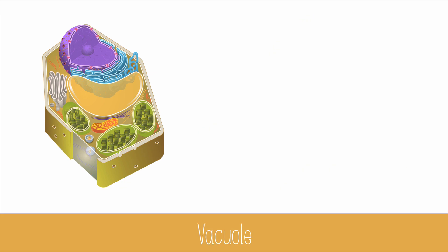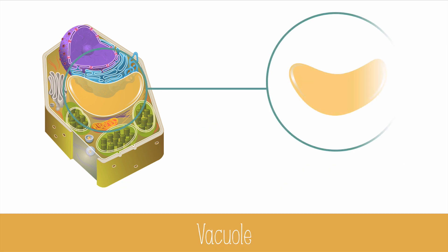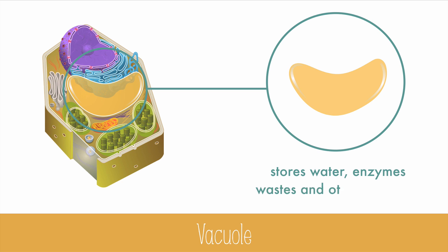The large central vacuole is a big fluid-filled storage tank. It stores water, enzymes, wastes, and other materials. It also creates a lot of pressure, pushing other organelles up against the edge of the cell and filling up to 90% of the space of the cell. This is a key water storage tank for plants. If they go through a very dry period, the vacuole shrinks, the cell loses turgor pressure, and the plant wilts.